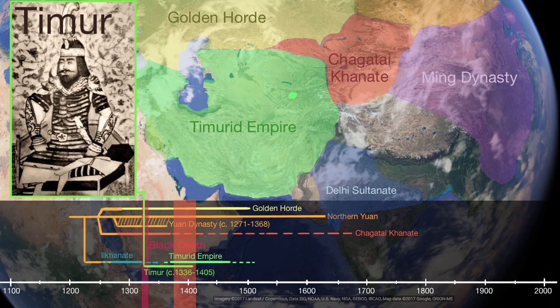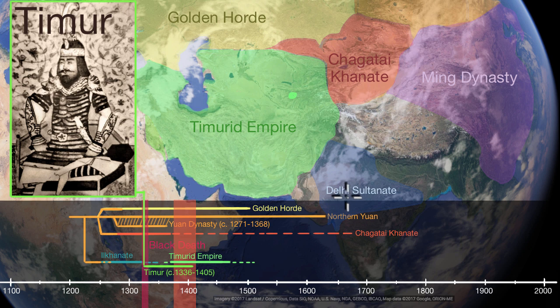Once Timur dies in 1405, the empire does not last long. As we get to the second half of the 15th century, it is in decline. Some of his descendants end up ruling over fragmented portions of this empire. As we get into the 16th century, one descendant in particular — his grandson's great-grandson — takes on the Delhi Sultanate and establishes the Mughal Empire in northern India. Mughal is Persian for Mongol.